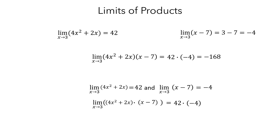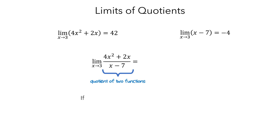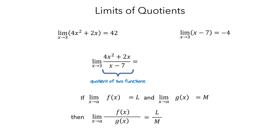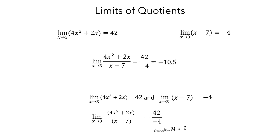In addition to products, we can also evaluate limits of quotients. Here is an example: the quotient of 4x squared plus 2x, divided by x minus 7. The quotient law says: if the limit as x approaches a of f of x equals l, and the limit as x approaches a of g of x equals m, then the limit of the quotient of f and g equals l divided by m, provided that m is not equal to 0, because the quotient would be undefined if the denominator were 0. Here, f of x is 4x squared plus 2x, so l is 42, and g of x is x minus 7, so m is negative 4. Thus the limit of the quotient is 42 divided by negative 4, which equals negative 10.5.